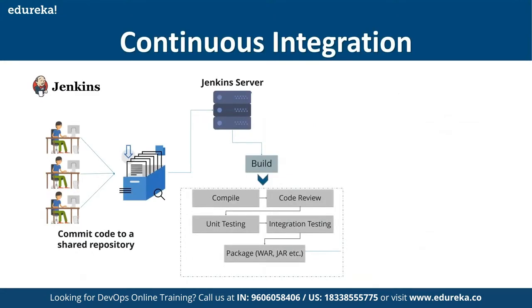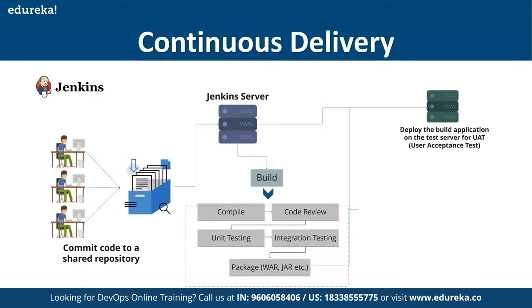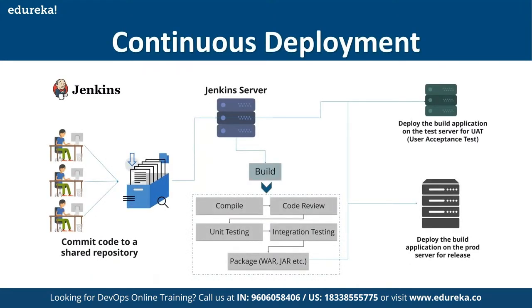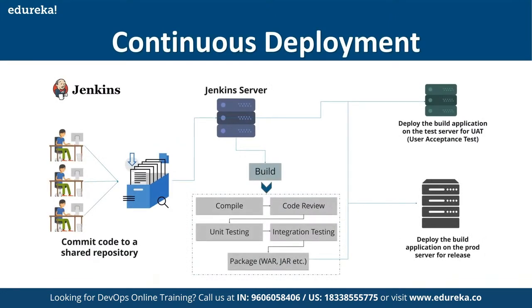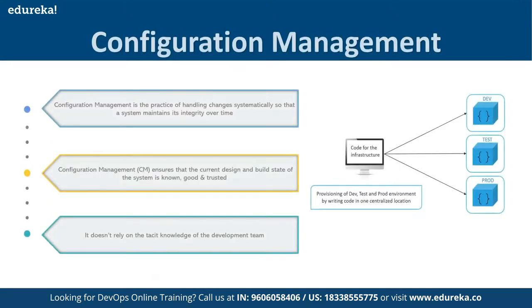Once your code is in a GitHub repository, you automate the continuous integration process — compiling, code review, unit testing — and package the code as a WAR or JAR file using CI tools like Jenkins with build automation tools like Maven. For continuous delivery, you first deploy to a lower life cycle like UAT, then with manual intervention — manager approval — promote to production. In continuous deployment, the entire lifecycle is fully automated with no manual intervention.